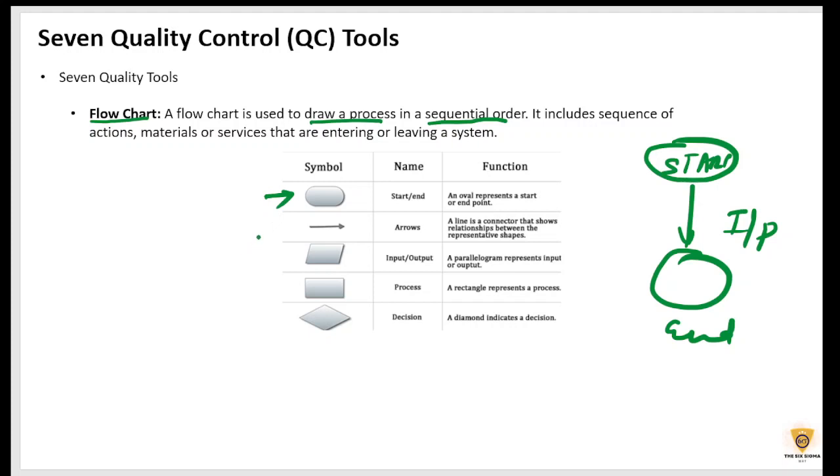This is for a start and an end. And this is for connecting. These are called arrows. These are input and output. This is for process. And this is for decision. This is a diamond box that's used for decision.